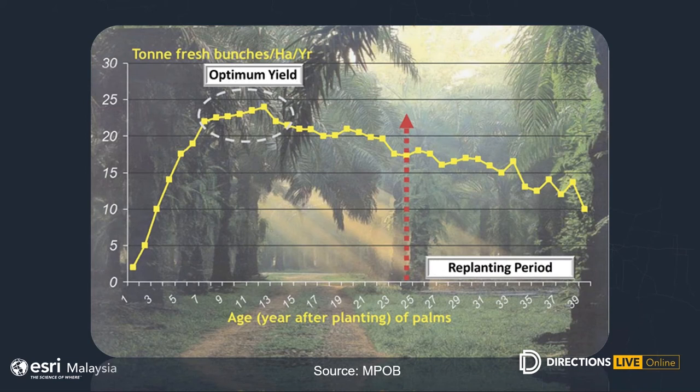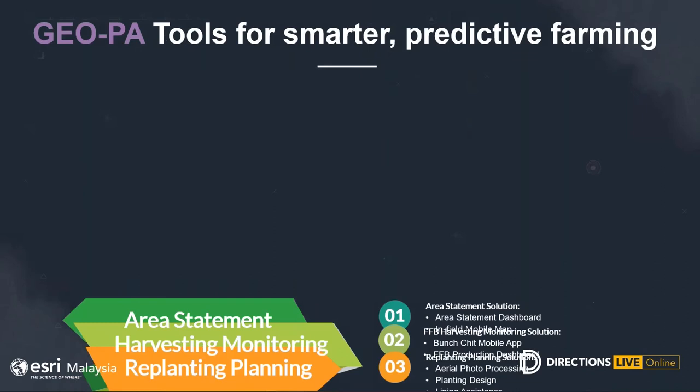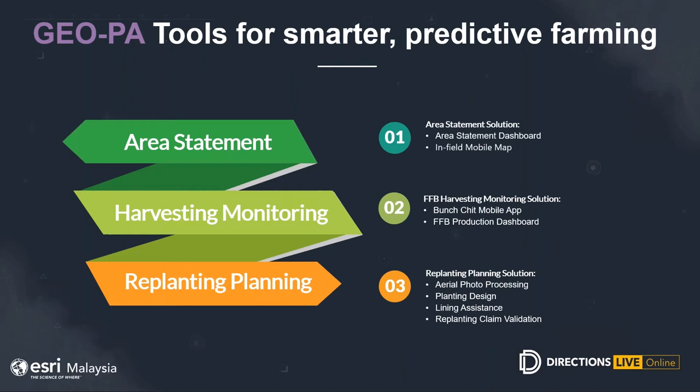Replanting can start as early as two years before the actual replanting. The question is whether we have any tools that we can use to pre-plan the design of the replanting for the next 25 years. Before I go further into the replanting planning application, let us quickly recap again what we have presented under the Geo-PA solution. If you missed the webinar session, no worry — we have recorded this. You can browse to the ESRI Malaysia events page to rewatch it again.